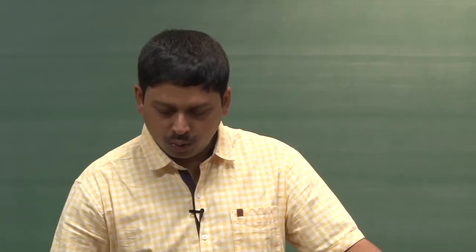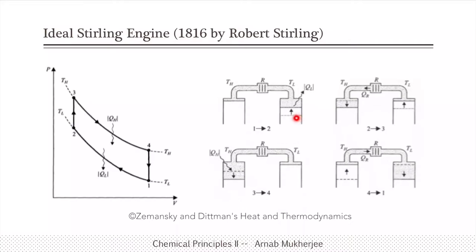An ideal Stirling engine basically has two pistons — one on the right side and another on the left side — connected through something called a regenerator R. One piston is in contact with a high-temperature heat reservoir and the other with the low-temperature reservoir. It starts at point one where there is a change in the volume of the right-side piston; in the right side, isothermal compression happens where the volume decreases from one to two, and during that process heat gets released out of the system.